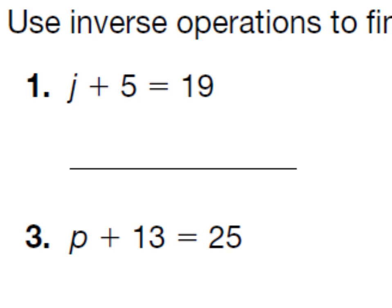Now a variable is when we have a letter inside the problem. For example, in number one, we have a J. J is our variable. We have to solve for J. And the way that we're going to do that is we have to use the inverse. Now remember, the inverse is the opposite. So the inverse of J plus 5, the inverse would be J take away 5.